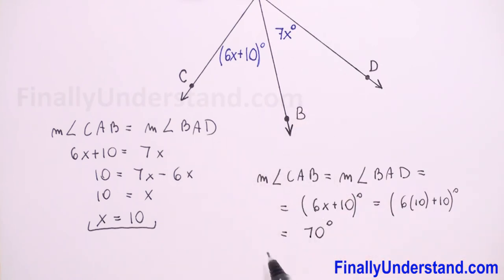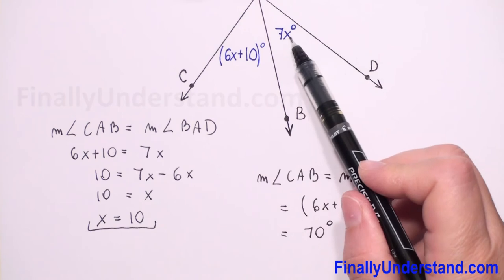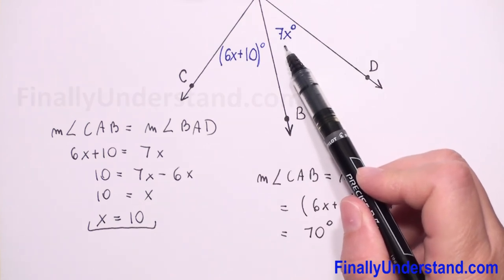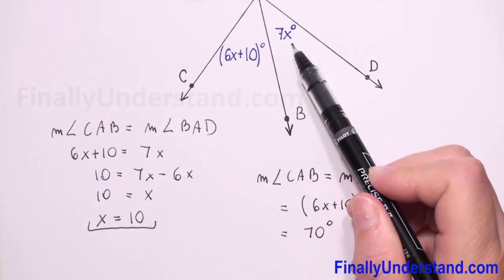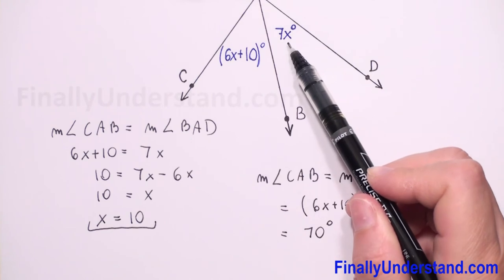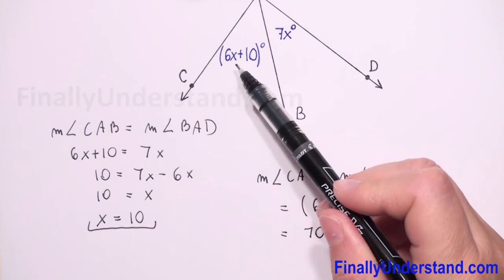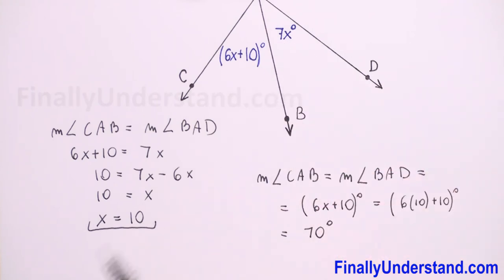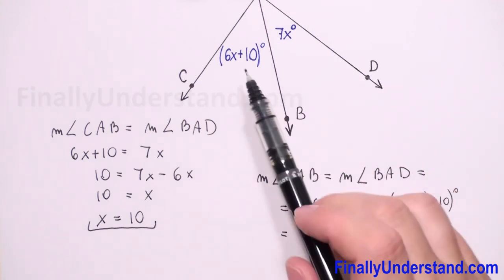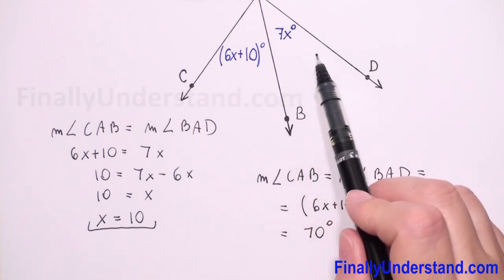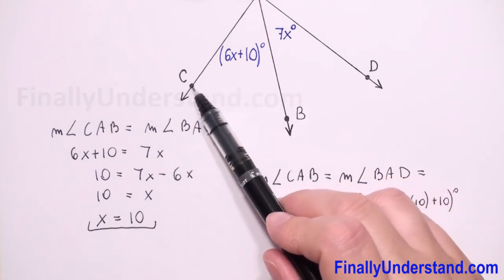So angles CAB and BAD are equal and each measures 70 degrees. Let's check: substituting x equals 10 into the second expression, 7 times 10, gives 70 degrees. So it doesn't matter which expression you choose — you get the same answer.